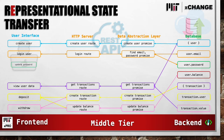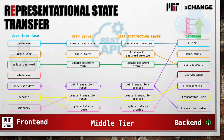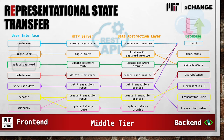Updating the password uses the updatePassword route, followed by the updatePassword promise, to write to the user password in the database. When deleting a user, we follow the HTTP deleteUser route, followed by the deleteUser promise, which removes a user object and corresponding transactions from the database.